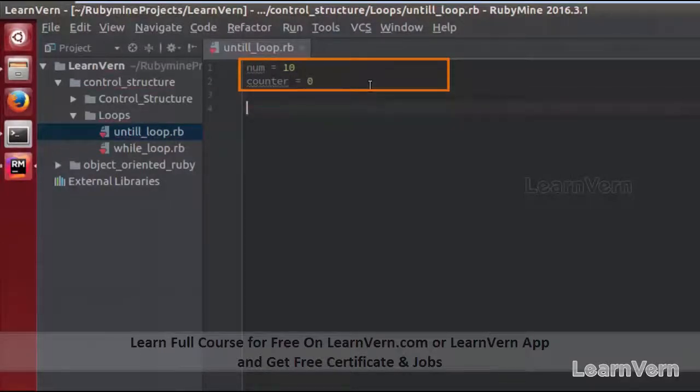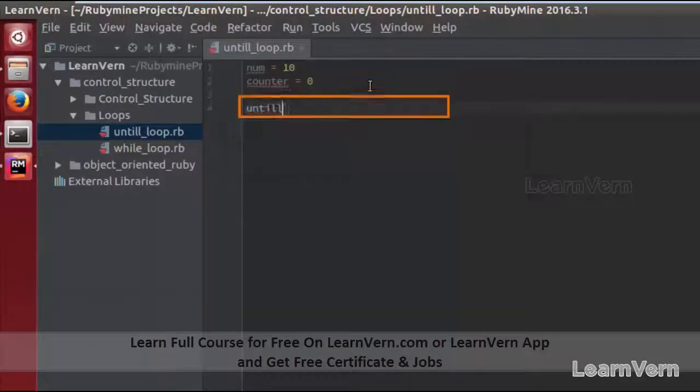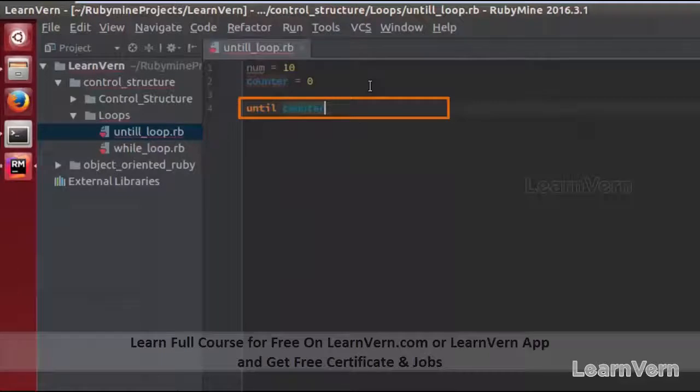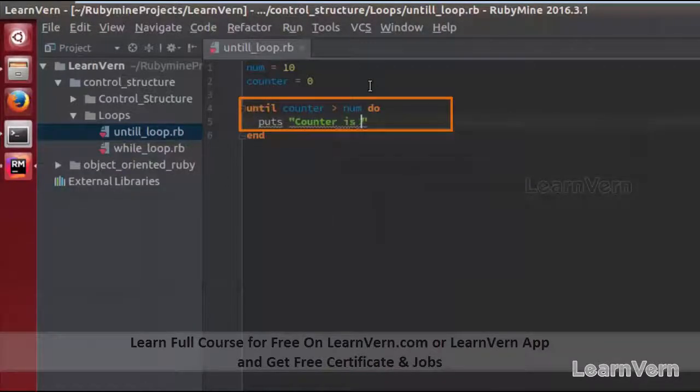Here I am defining my loop execution block: until my counter variable is greater than number. What I need to do is I am printing out its value, puts counter is and I am printing my counter variable. Below this printing line, I am incrementing my counter variable each time, so counter equals counter plus one.